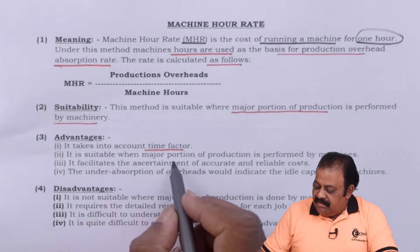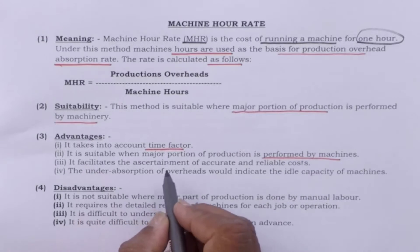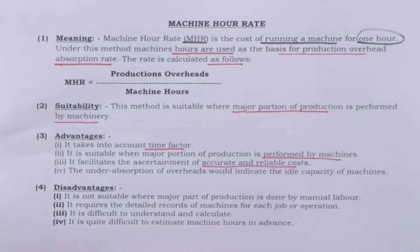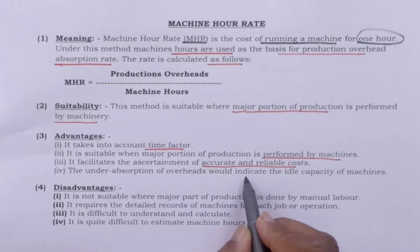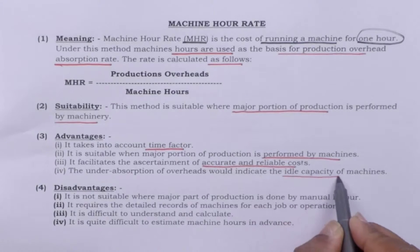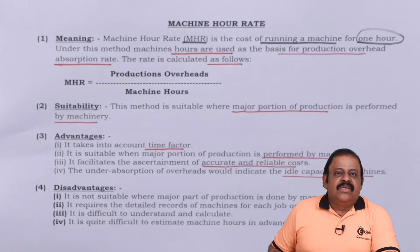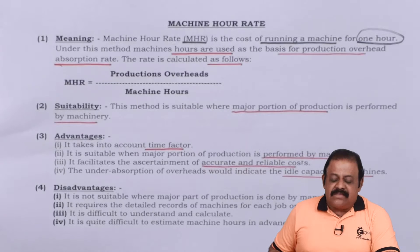It is suitable when the major portion of production is performed by machines. It facilitates the ascertainment of accurate and reliable cost. The under-absorption of overheads would indicate the idle capacity of machinery. If machinery is not fully used, it will be a waste of resources. If there is idle time, it indicates that management is failing to use the full capacity of the machinery, leading to loss for the business.